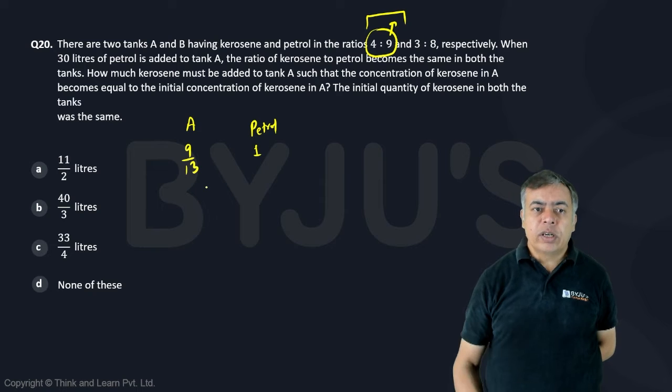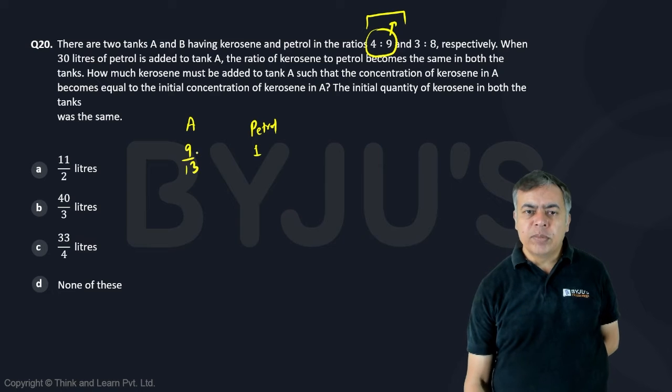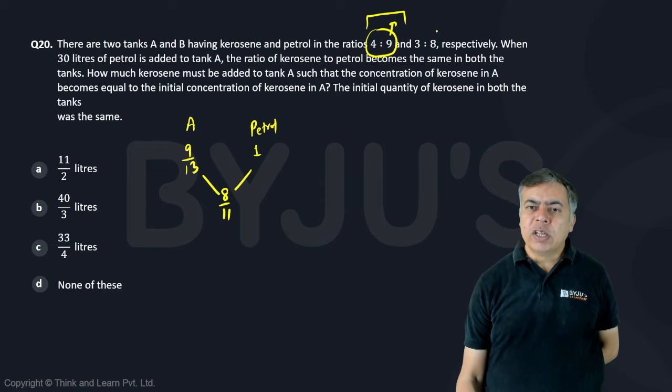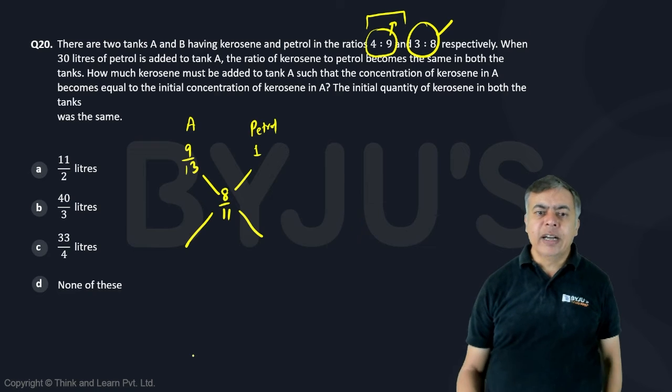So when 30 litre of petrol is added to tank A, the ratio of kerosene to petrol becomes the same in both the tanks. So that means it becomes 3 to 8, because kerosene and petrol is 3 to 8 in the second tank. So it should become 3 to 8, that means petrol should become 8 out of 11. So it will become the same ratio as of the second tank.